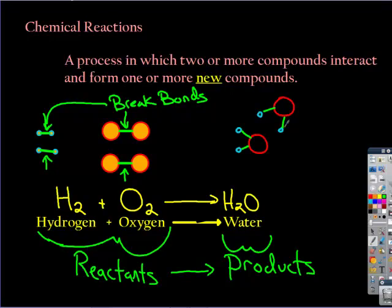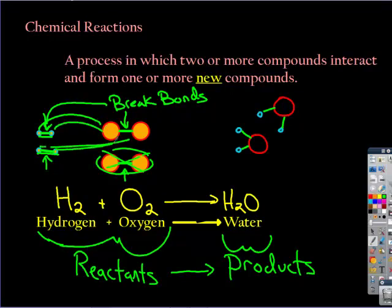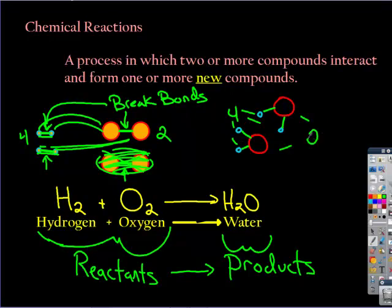Some important things to notice: these hydrogens separated and reorganized — they decided to bond with the oxygen. All the things that were present at the beginning are still there. You still have four hydrogen atoms and two oxygens on the reactant side, and four hydrogen atoms and two oxygens on the product side. Everything's there — we just rearranged it.